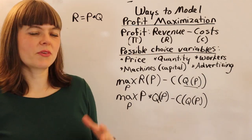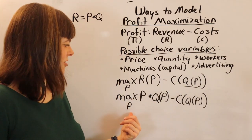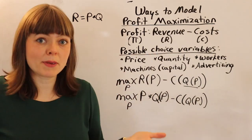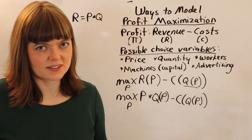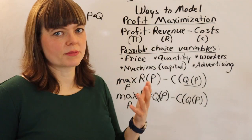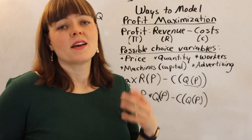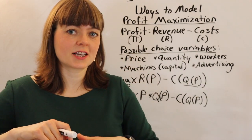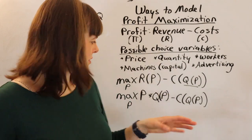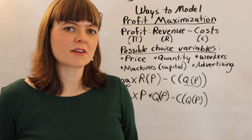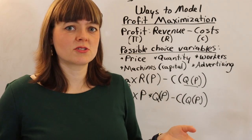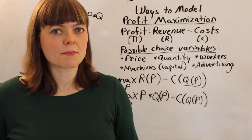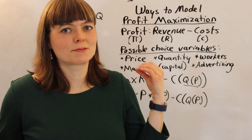We've now set up a profit maximization function where price is the choice variable. This cannot be perfect competition since price is not exogenous — it could be a monopoly or monopolistic competition model. That depends on the shape of the demand curve: if it's fairly elastic due to imperfect substitutes, it's monopolistic competition; if fairly inelastic with almost no good substitutes, it's more of a monopoly model.